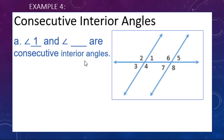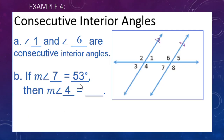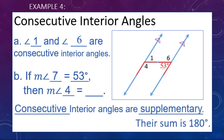Examples: angle one and angle blank are consecutive interior angles. There's angle one; looking for an interior angle on the same side of the transversal — that's angle six. If angle seven is 53 degrees, what is angle four? These are not congruent — one is acute and one is obtuse. Consecutive interior angles are supplementary; their sum is 180 degrees. So 180 minus 53 equals 127 degrees for angle four.